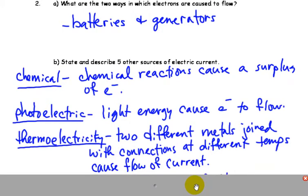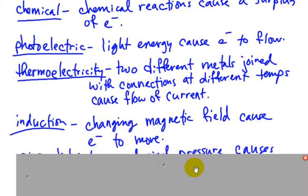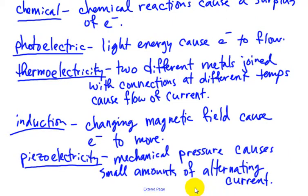Thermoelectricity, if you have two different metals joined at a connection, that are at different temperatures, that could cause a current to flow. Induction, a magnetic field moving around wires will cause electrons to flow. And also piezoelectricity, actual mechanical pressure could be enough to cause a small amount of alternating current.